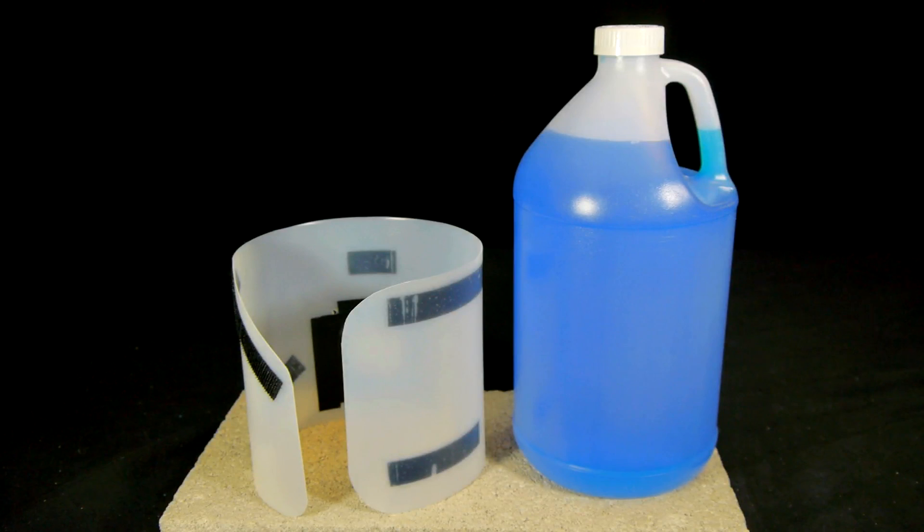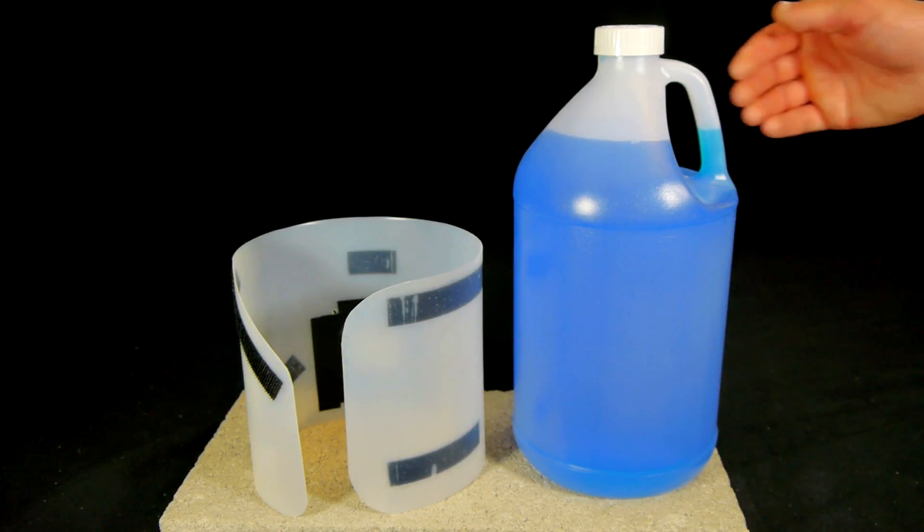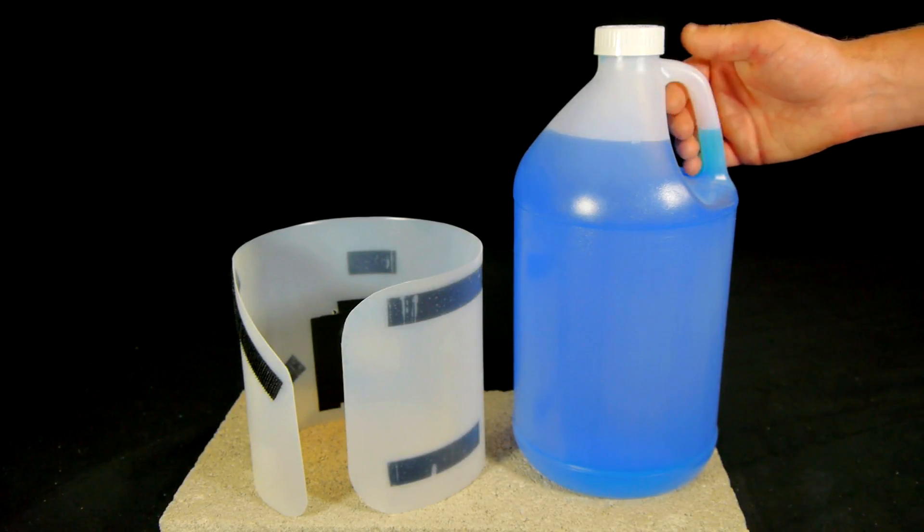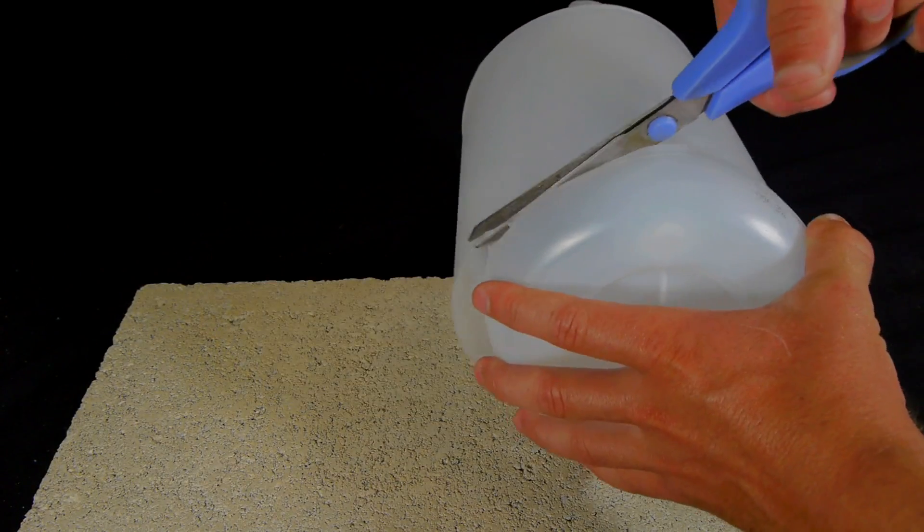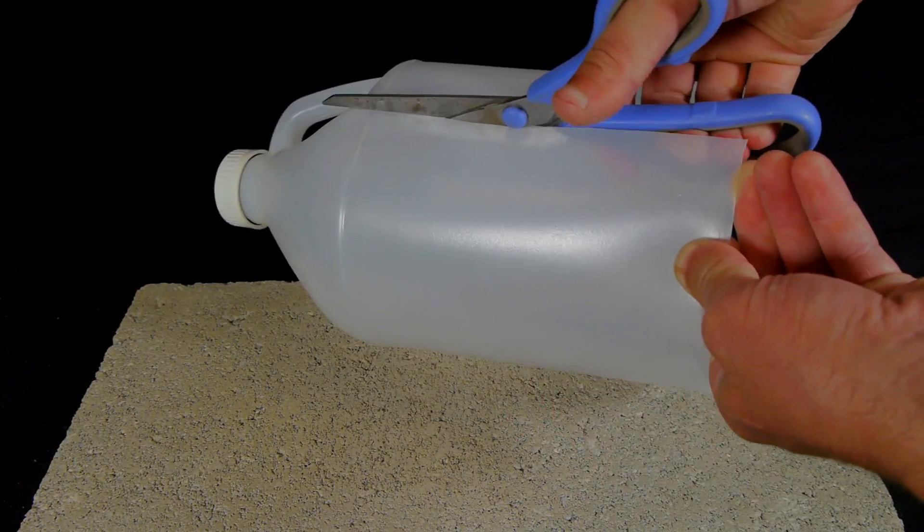The plastic sheath for this harness can be cut out of the side of a one gallon bottle such as this gallon of windshield washer fluid. With the bottle emptied and rinsed we can move on to cutting a sheet of plastic out of its side.